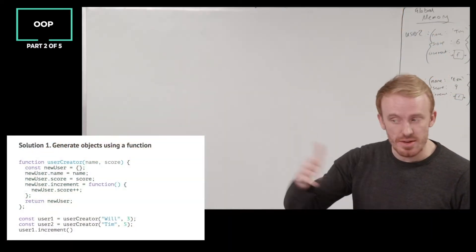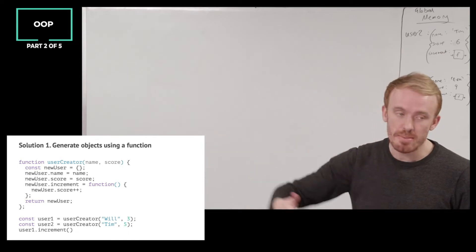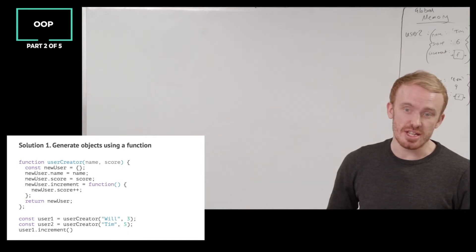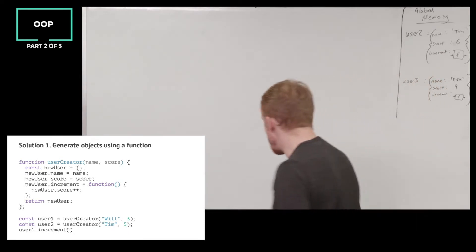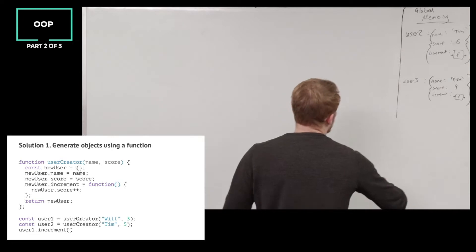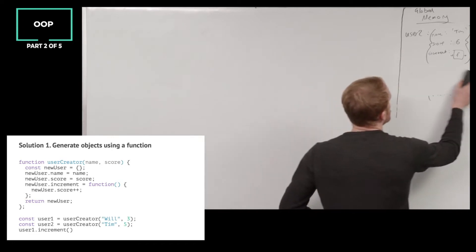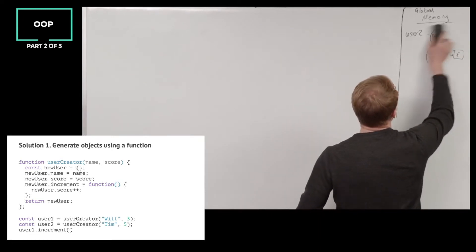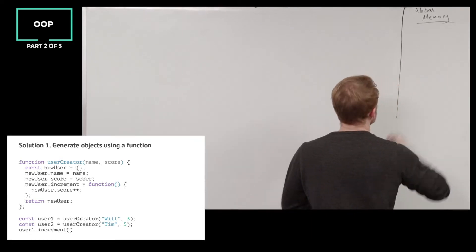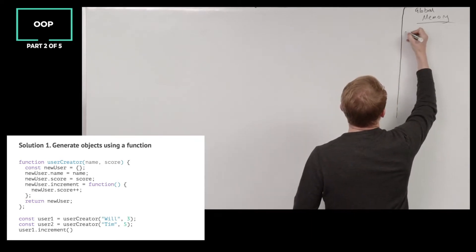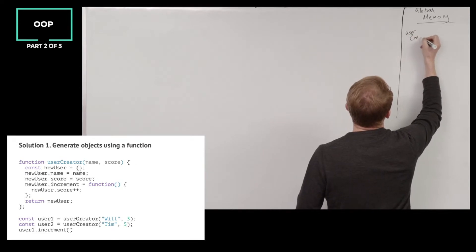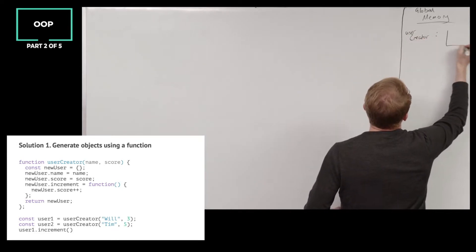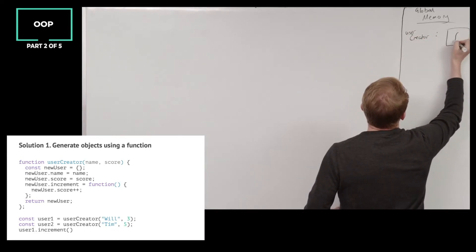It's creating objects with data and functionality bundled together, so it's doing its fundamental job. Line 1 - let's see it do its job. What are we doing in line 1? We're creating a function userCreator with the parameters named and score. There it is - there's the function.